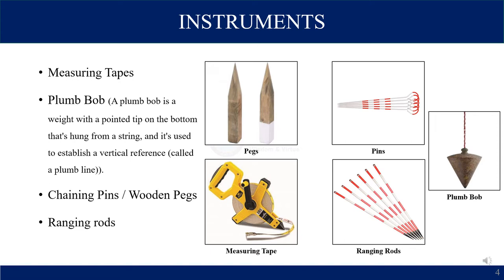What is a plumb bob? A plumb bob is a weight with a pointed tip on the bottom that is hung from a string. Its purpose is to establish a vertical reference, which is called a plumb line.